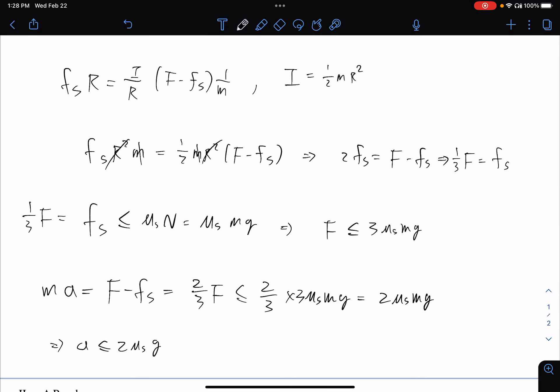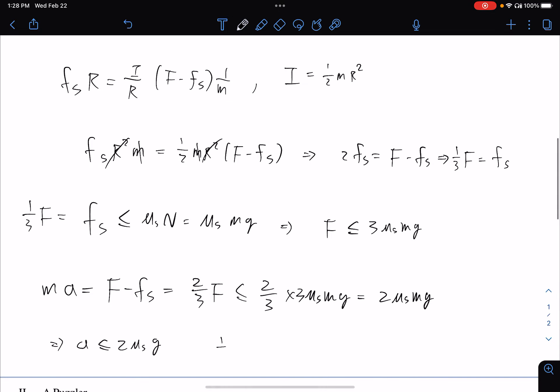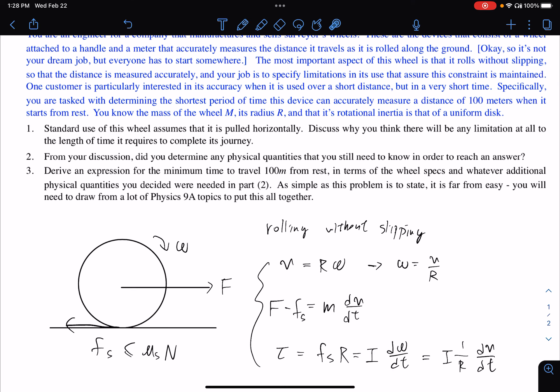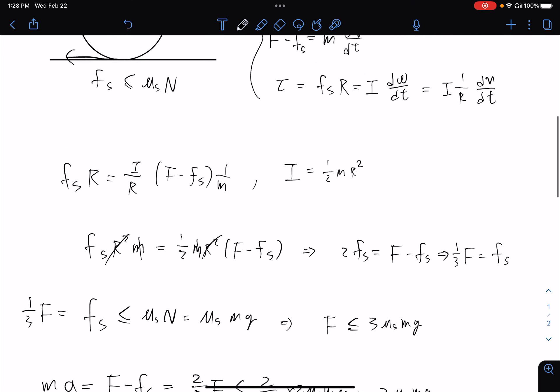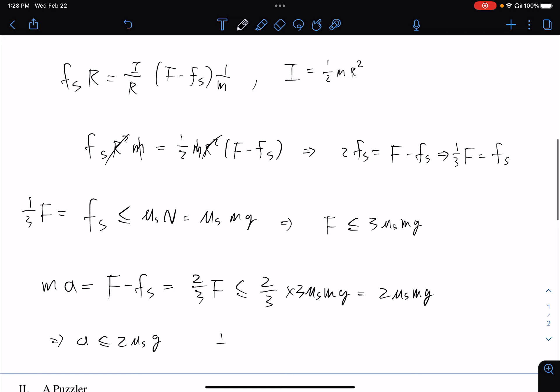So therefore if we plug in, if the wheel starts from rest, then we know that the distance that you can go through is 1/2 at², and because t is, then we can get that t should be, okay so because...